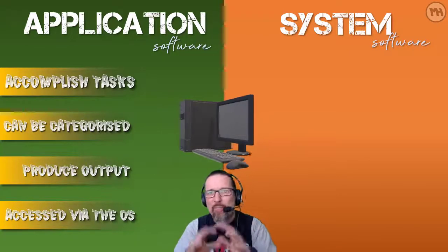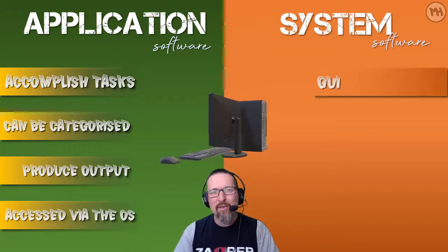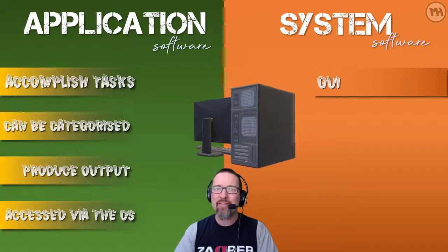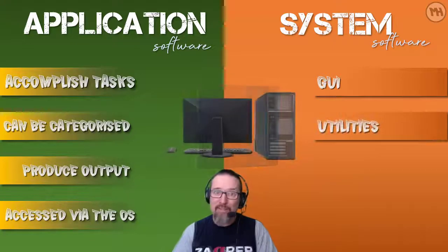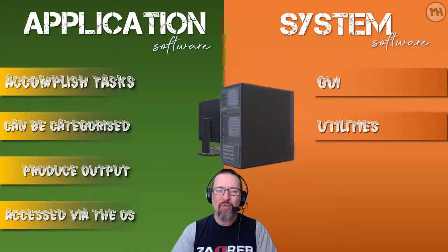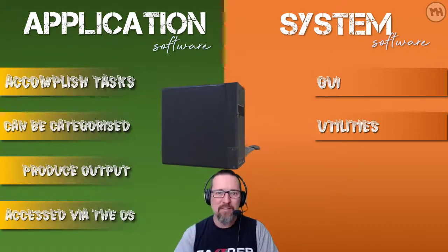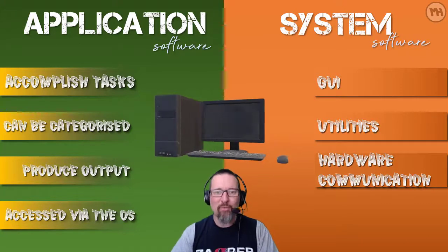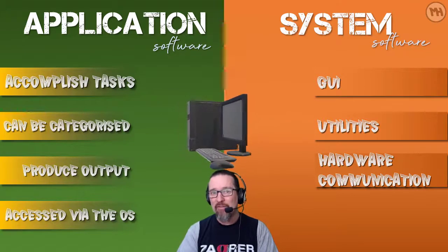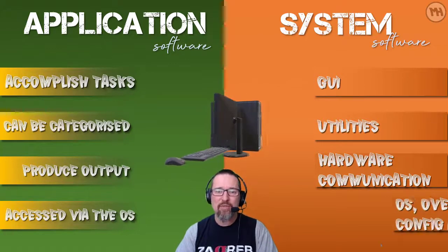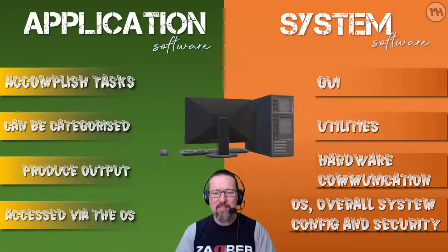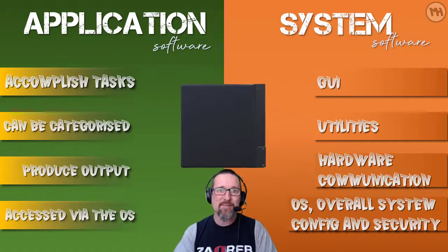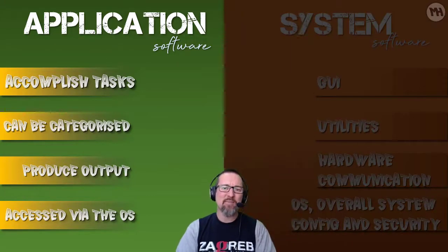When we look at system software, we're talking more about the GUI — the graphical user interface — and utilities. Utilities come bundled with the operating system, which allows you to perform certain tasks for maintenance or cleaning up the operating system. Hardware communication is also key — the whole point of having system software is to communicate with the hardware of the device or computer system you are using, and of course running the operating system, looking after the overall security and configuration of your operating system. That's what system software is for.